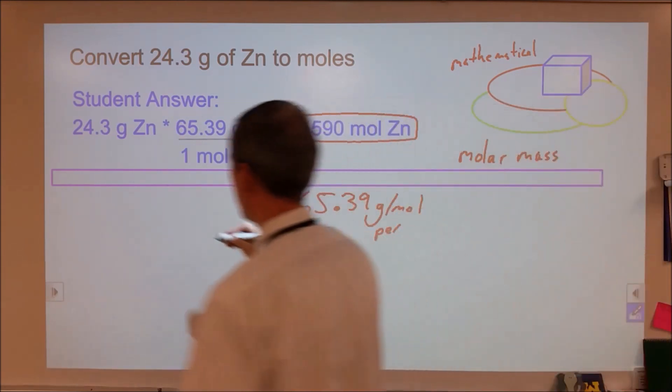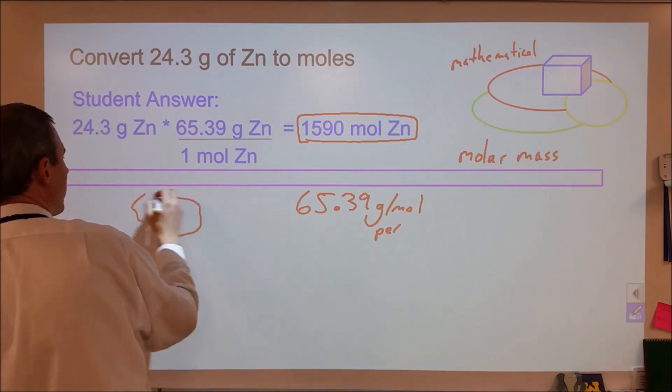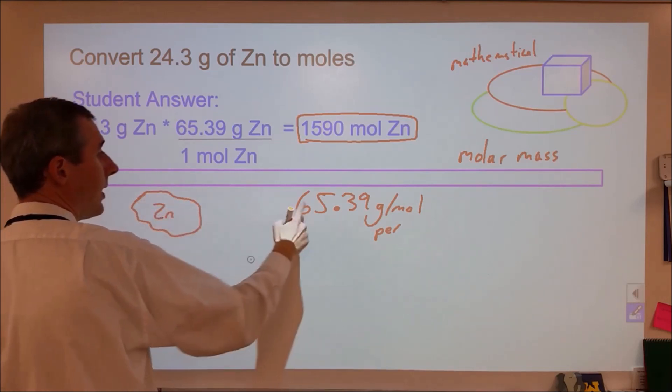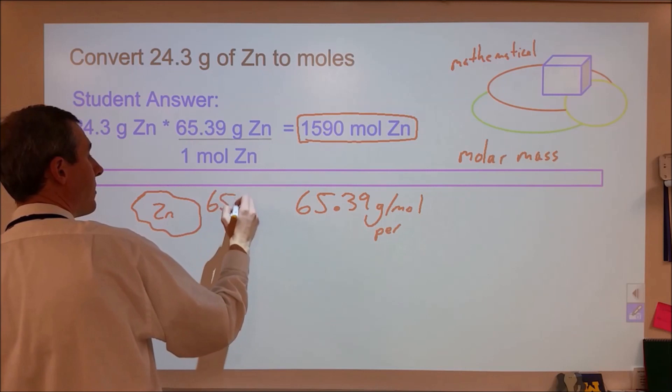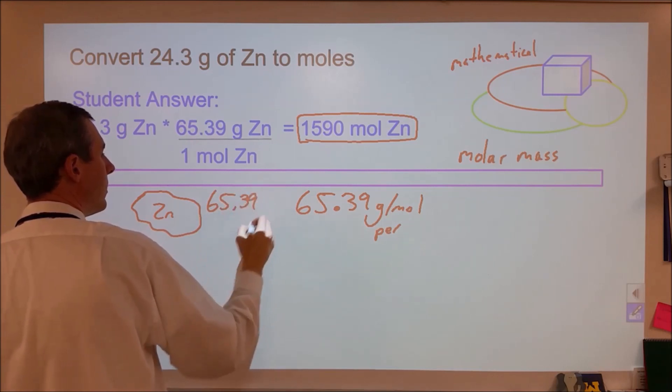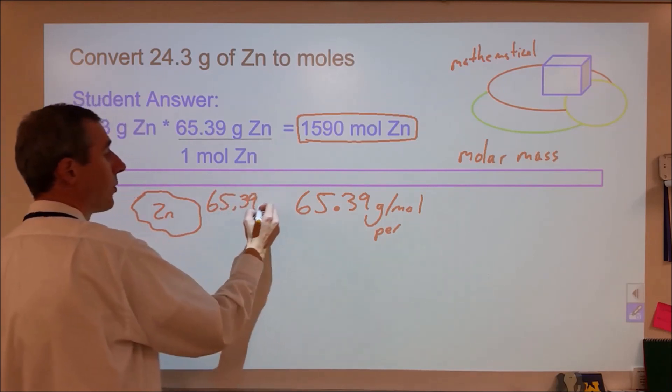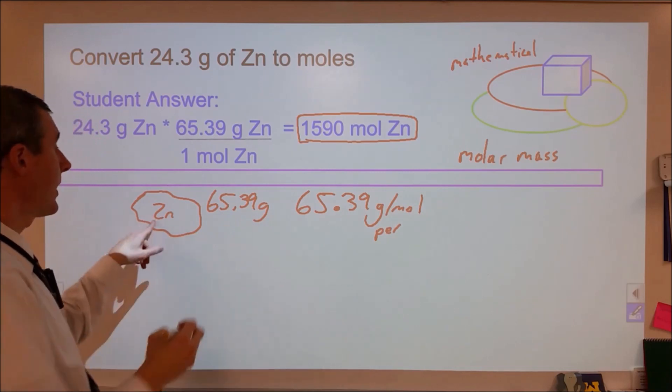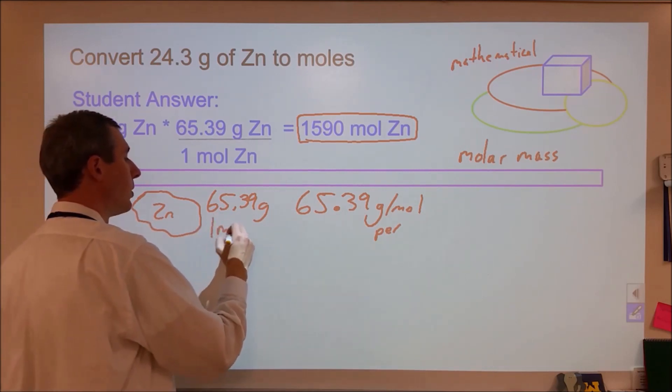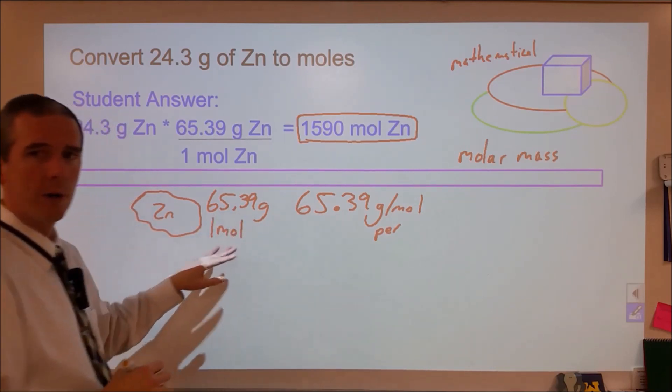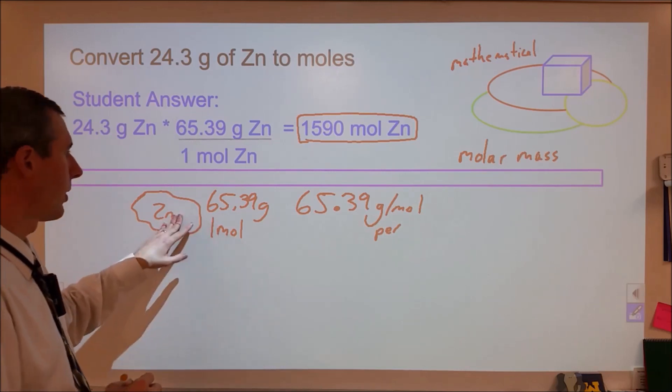So what's important though is that you know that this is grams per mole and have an idea of what that means. What that's trying to suggest is if we had a lump of zinc like this and that lump happened to be a mass of 65.39 grams, that that lump would also be equivalent to one mole of zinc atoms or 6.02 times 10 to the 23rd particles.